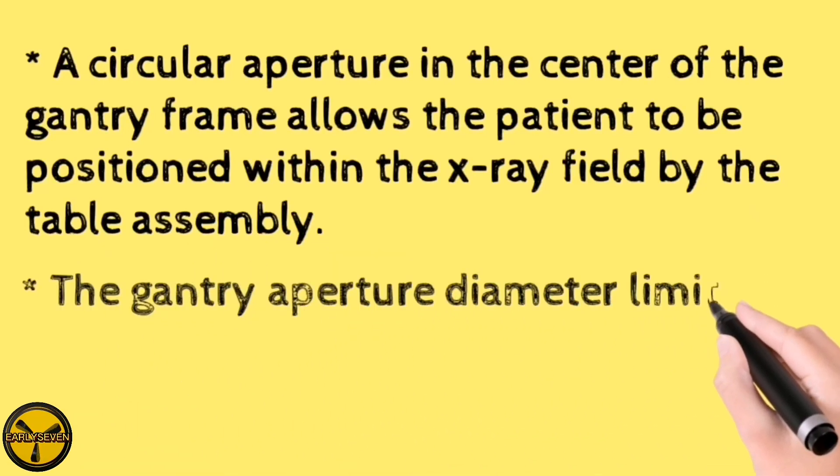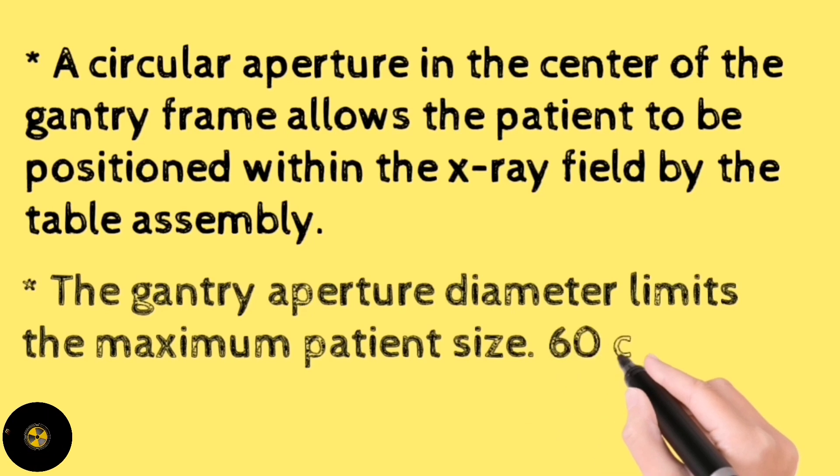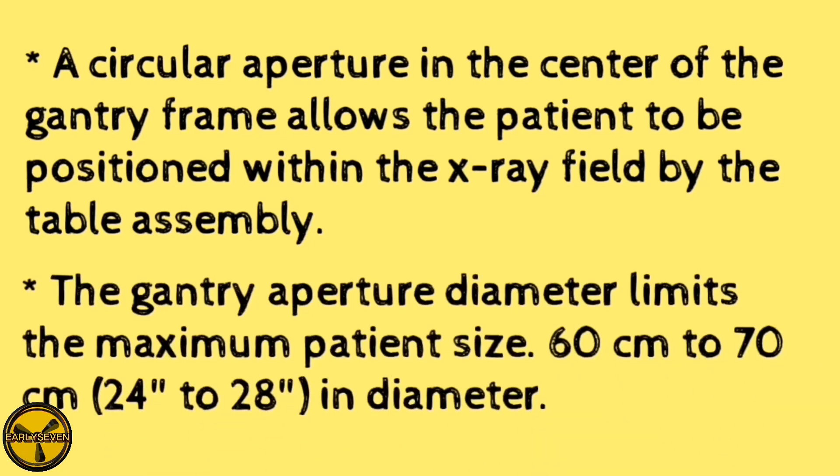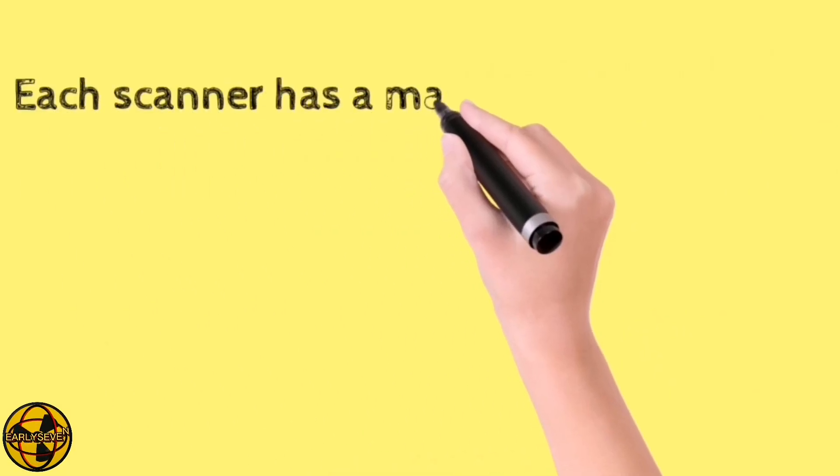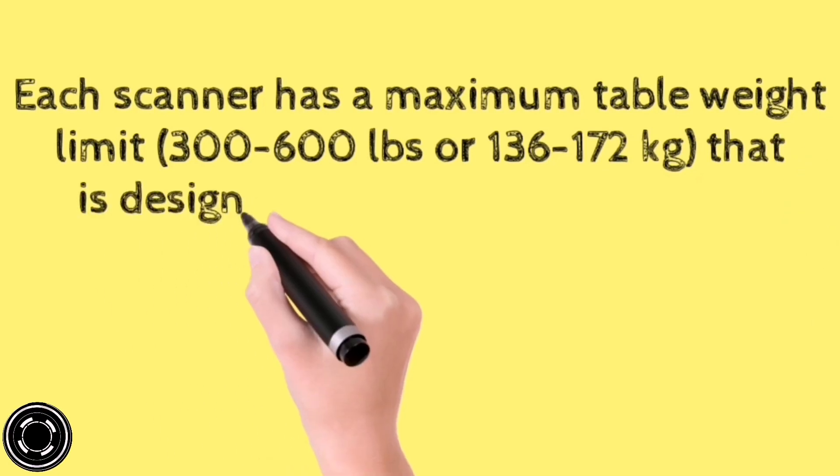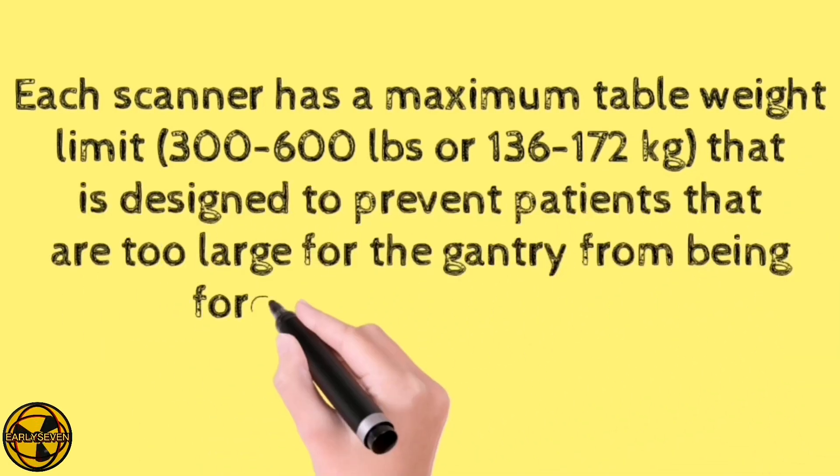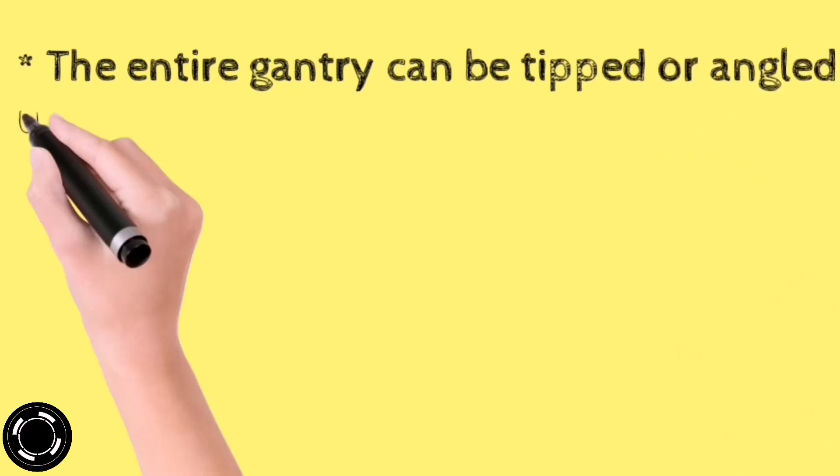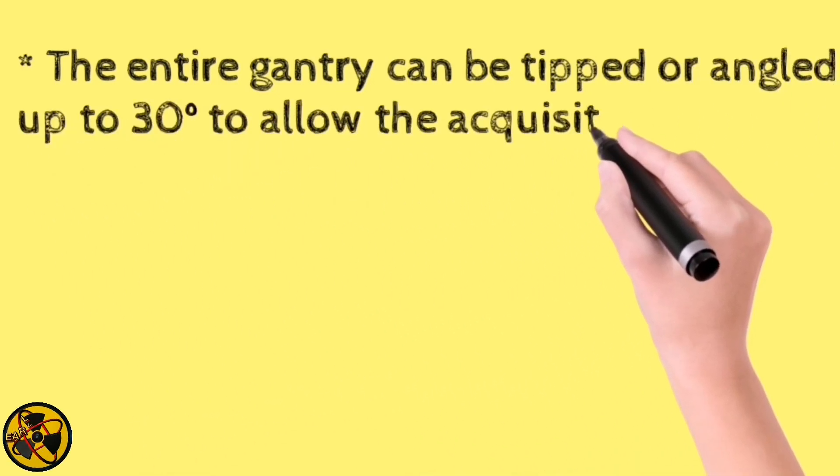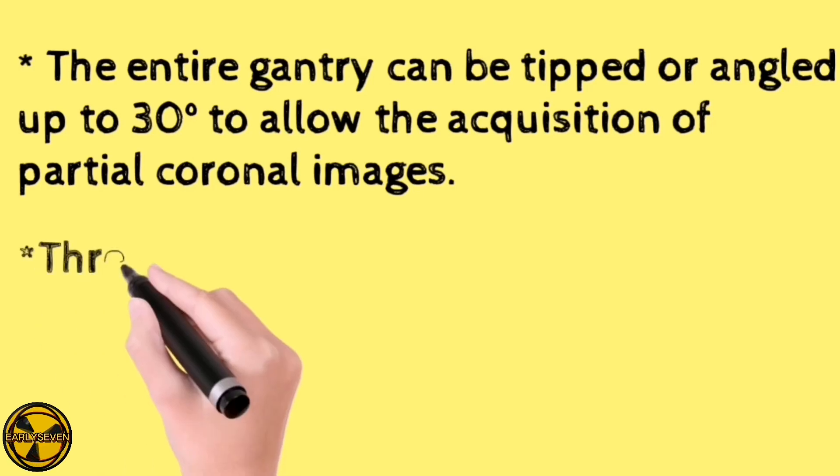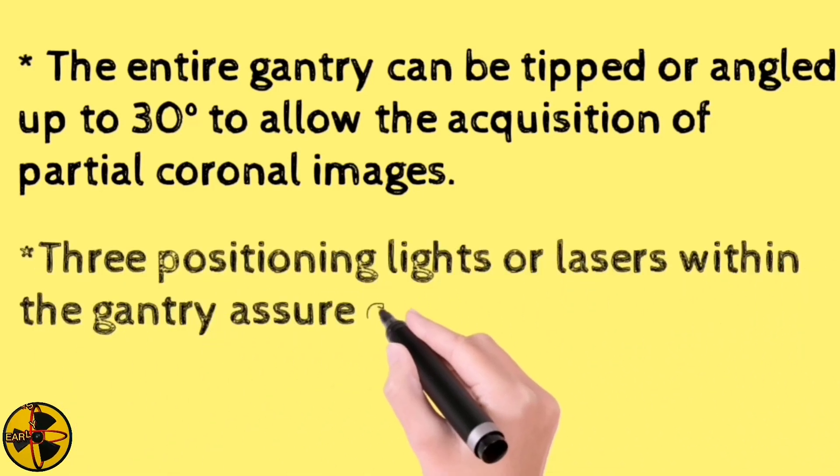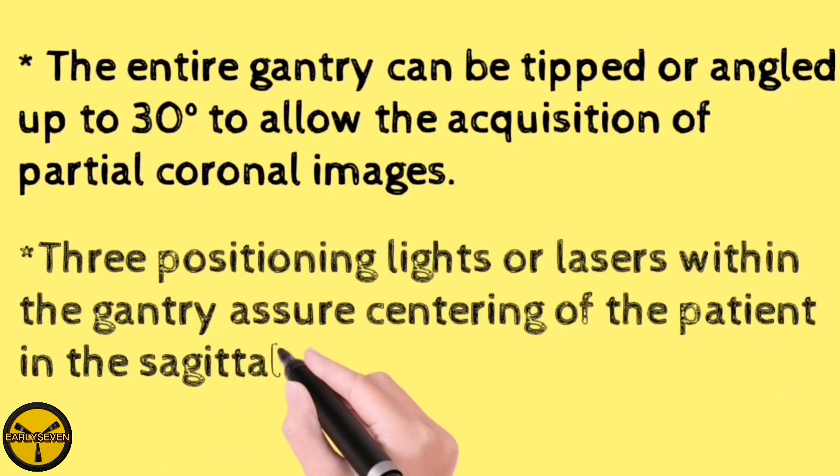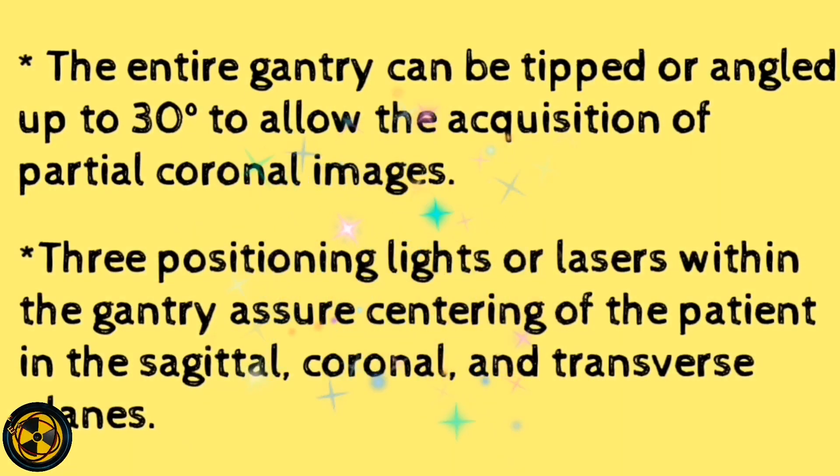The gantry aperture diameter limits the maximum patient size which is 60 cm to 70 cm or 24 to 28 inches in diameter. Each scanner has a maximum table weight limit of 300 to 600 lbs or 136 to 172 kg that is designed to prevent patients that are too large for the gantry from being forced into the scanner. The entire gantry can be tipped or angled up to 30 degrees to allow the acquisition of partial coronal images. Three positioning lights or lasers within the gantry assure centering of the patient in the sagittal, coronal and transverse planes.